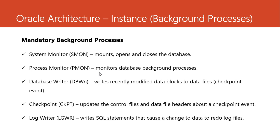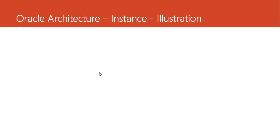Then the last mandatory process is called the log writer. It is charged with moving the SQL statements that caused a change from the redo log buffer to the redo log file. The redo log buffer in the SGA is charged with storing SQL statements that caused a change to data, but this is done temporarily. Those are the five mandatory processes that must be available in the instance for us to use the database: the system monitor, the process monitor, the database writer, the checkpoint, and the log writer. Let us see this in an illustration to understand it further.